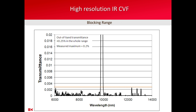This slide shows one of the same peaks in a much zoomed y-scale or transmittance scale, showing the blocking capability of the type of blocker that we have used for this high-resolution circular variable filter.